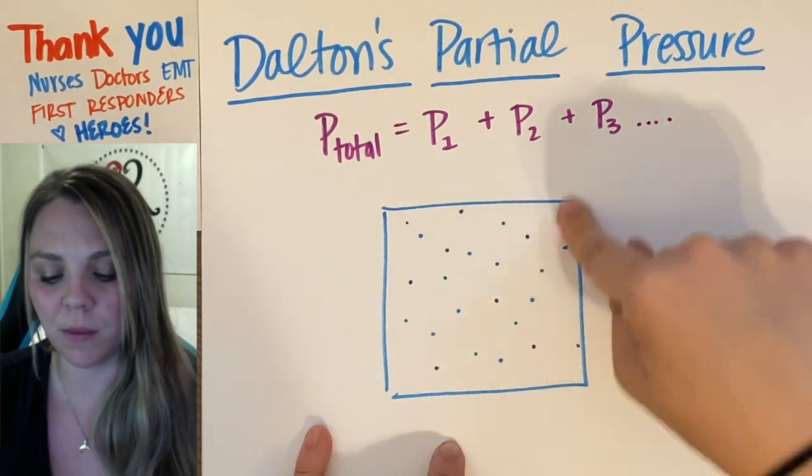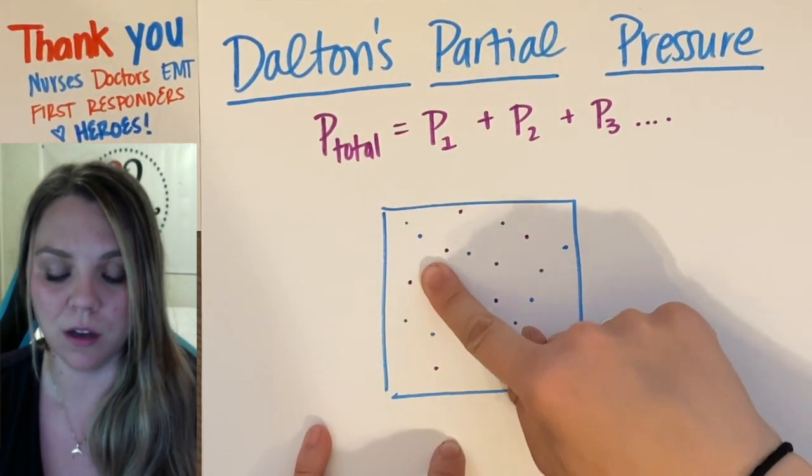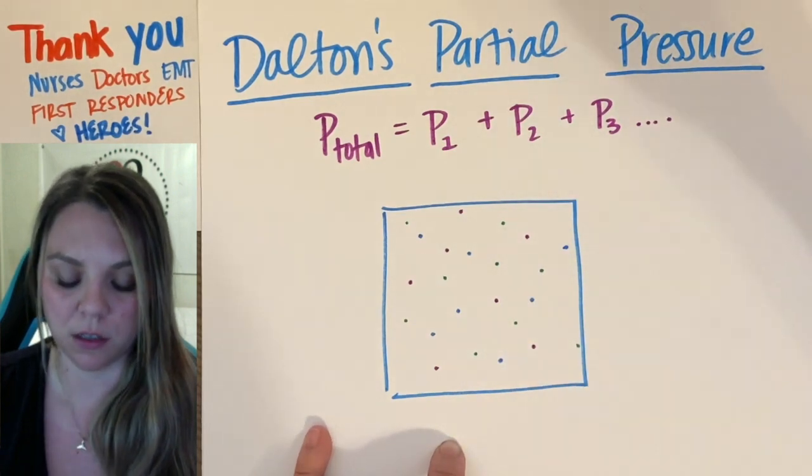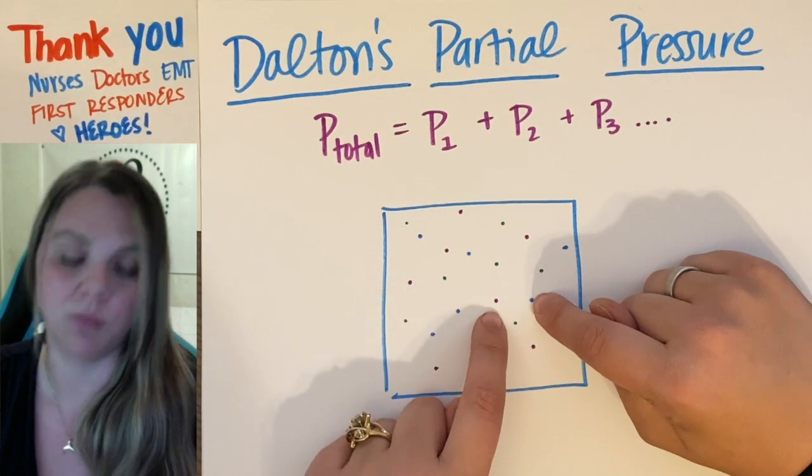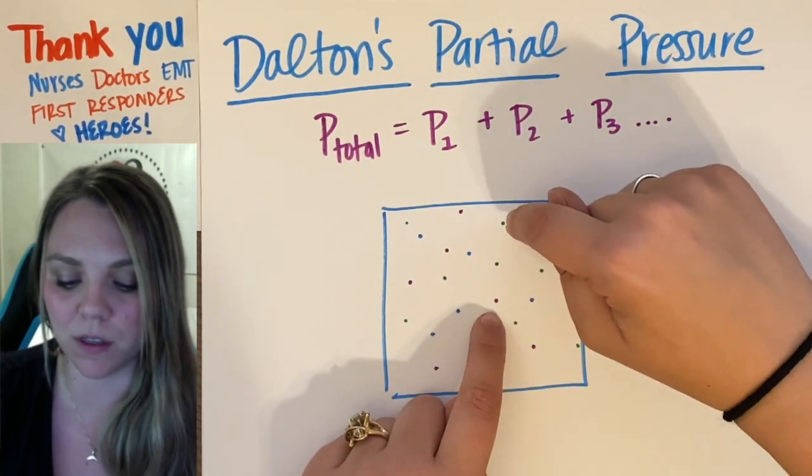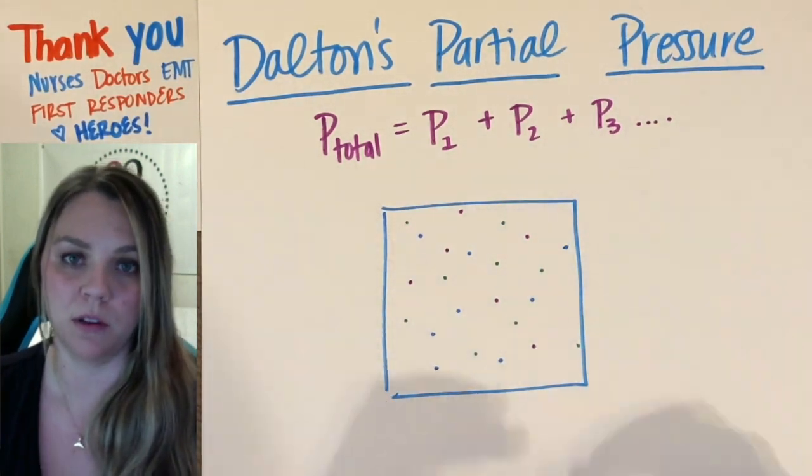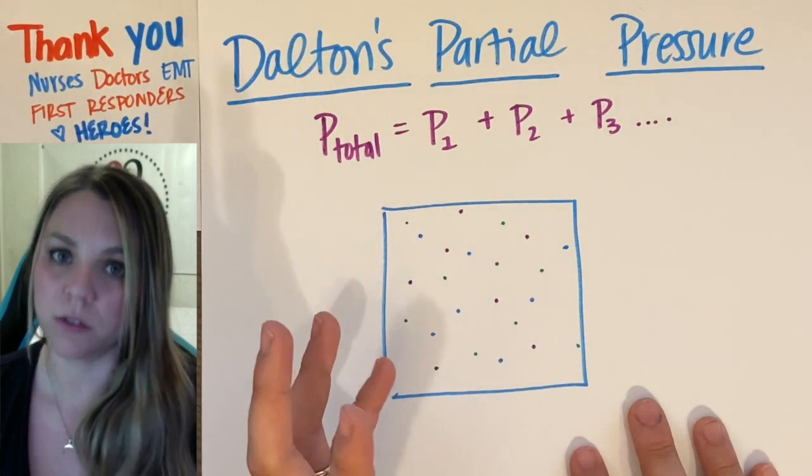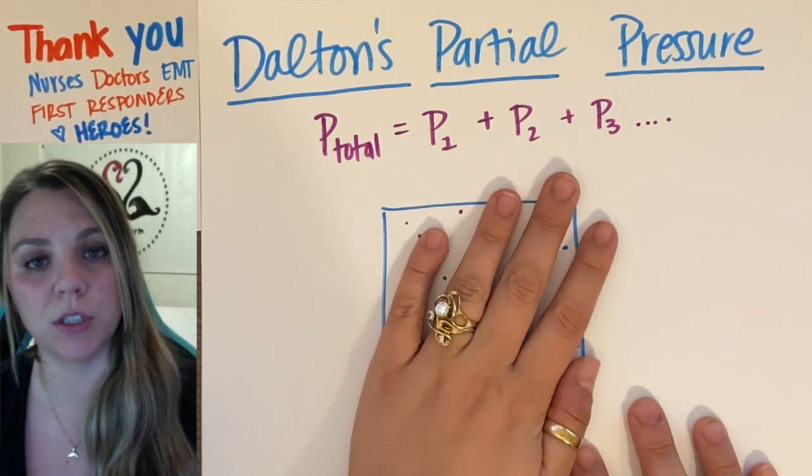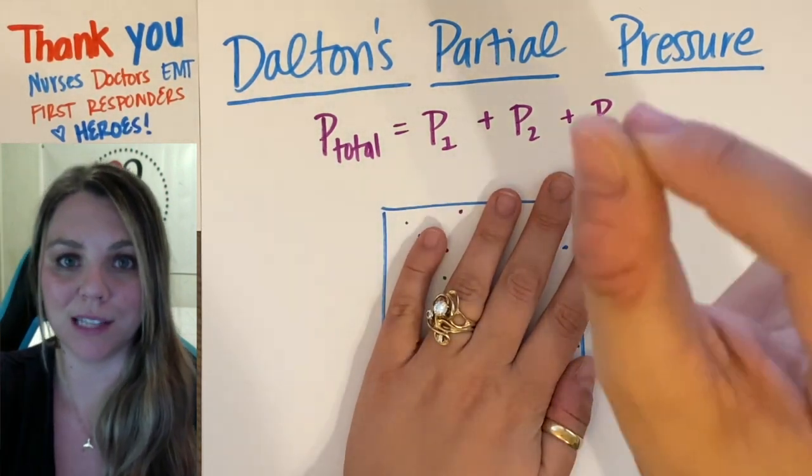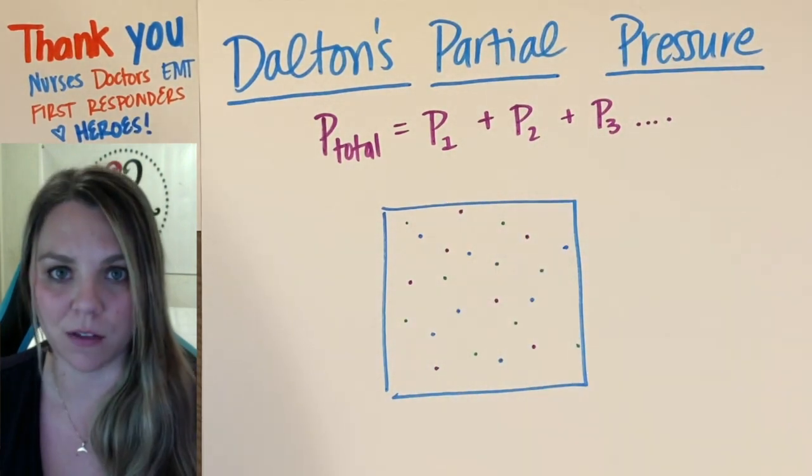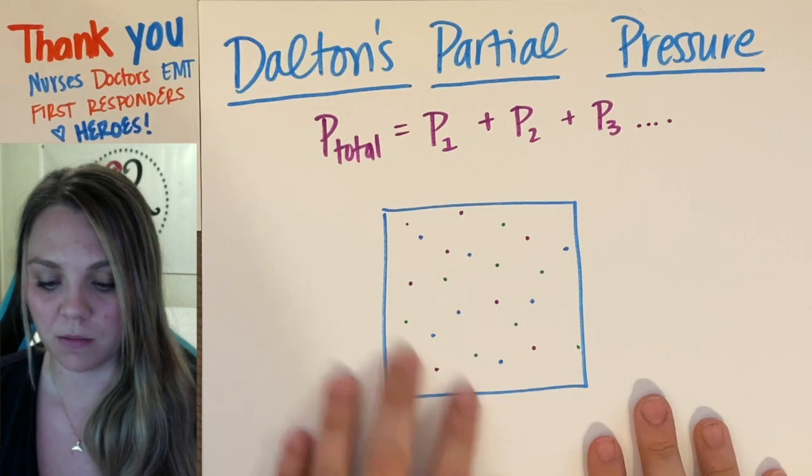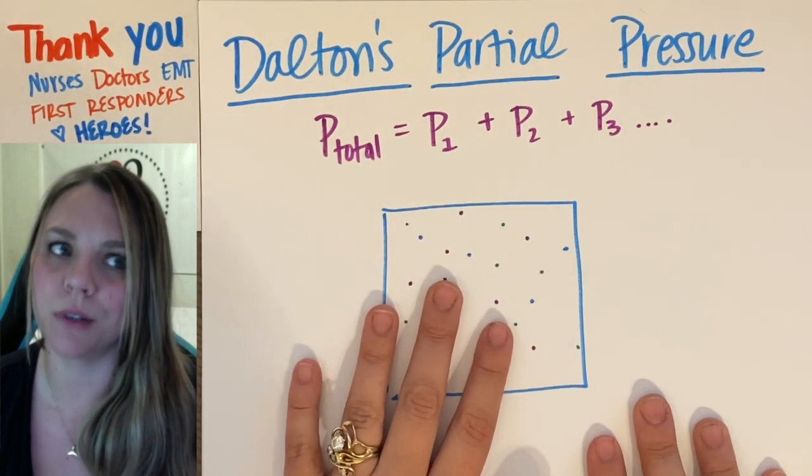The gases are not interacting with each other, so they're just zinging around in the container itself. If I'm trying to figure out my total pressure in this container, I can figure out the pressure of my first gas, the blue gas, the pressure of the purple gas, and the pressure of the green gas and add them all up. Or, alternatively, I could have what my total pressure is, and I can try and figure out exactly how much pressure one gas is exerting on it by subtracting out everything else. That's the main idea, so pretty easy.